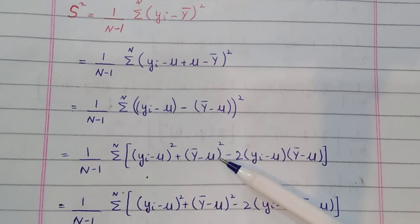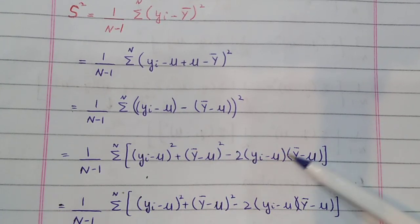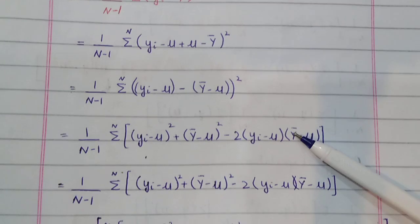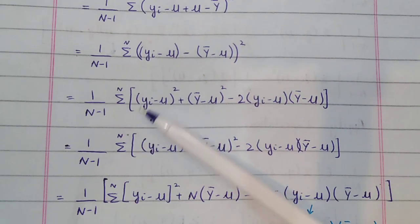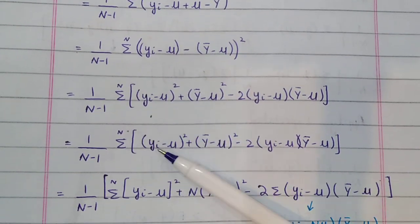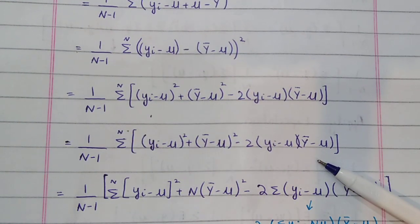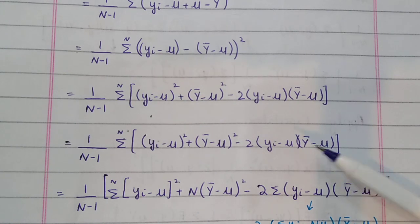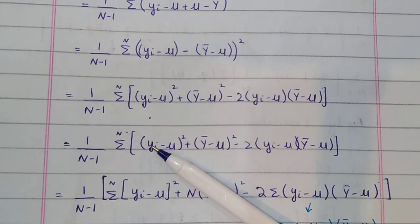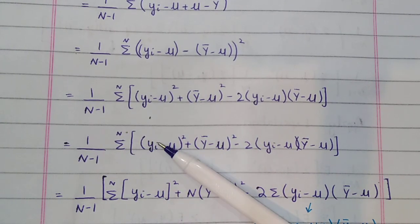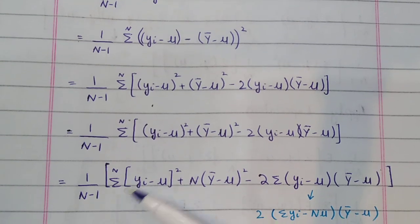The whole-square formula is a-square plus b-square minus 2ab. We write it out: here we have a-square and this term is the same. In the next step we apply the summation inside. When we apply this summation, it distributes across the terms.